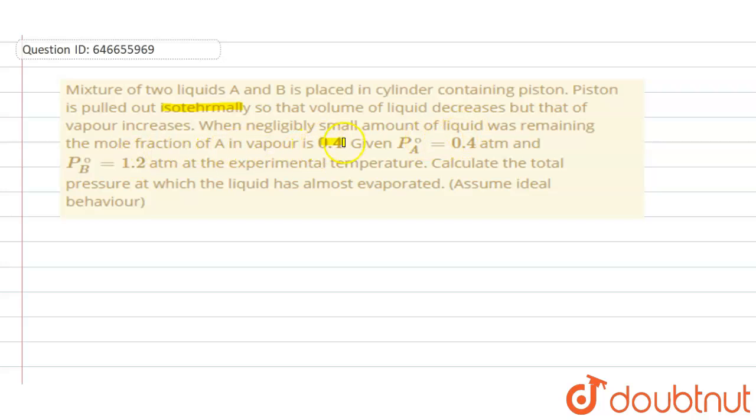of A in vapor is 0.4. Given P_A° = 0.4 atm and P_B° = 1.2 atm at the experimental temperature, calculate total pressure at which the liquid has almost evaporated. So we need to calculate the total pressure.